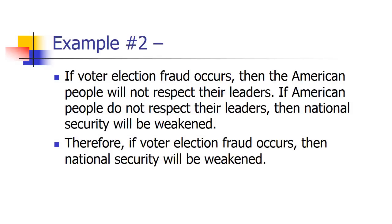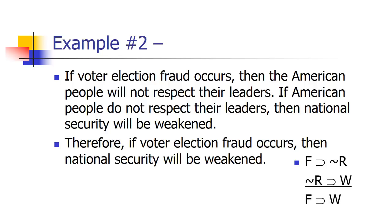Let's do another example. If voter election fraud occurs, the American people will not respect their leaders. And if they don't respect their leaders, then national security will be weakened. Does it follow that if voter election fraud occurs, then national security will be weakened? I'm going to use F for fraud occurring, tilde R for people not respecting, and W for national security being weakened. This is the argument we're going to test.